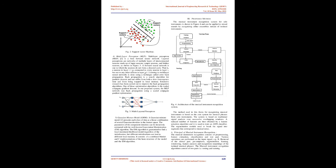Gaussian Mixture Model (GMM): a Gaussian Mixture Model presents each class of data as a linear combination of several Gaussian densities in the feature space. The parameters of the component densities can be iteratively estimated with the well-known Expectation Maximization (EM) algorithm. The EM algorithm is guaranteed to find a local maximum likelihood model regardless of initialization, but different initializations can lead to different local maxima. It consists of a combined MATLAB and C implementation of the basic model structure and the EM algorithm.